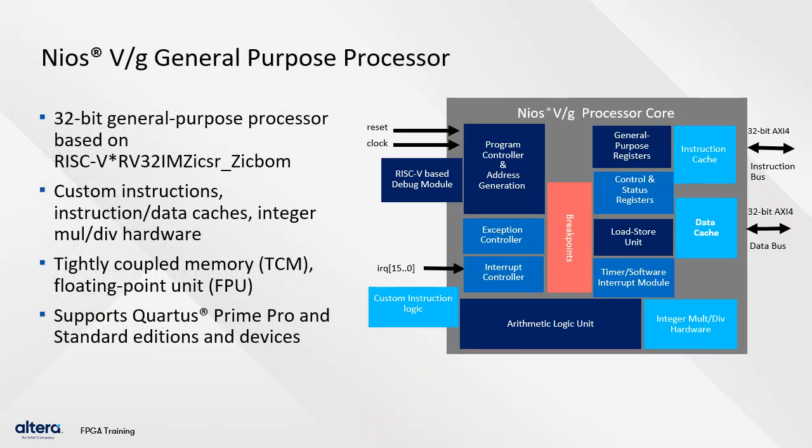The NEOs 5G is used to accelerate time-critical software algorithms by converting them into custom hardware logic blocks. It is the second processor IP from the NEOs 5 portfolio and enables more features compared to NEOs 5M. Also supported in Quartus Pro and Standard editions, its additional functional units include instruction and data caches, multiply and divide units, custom instruction logic, a floating point unit, and tightly coupled memories.